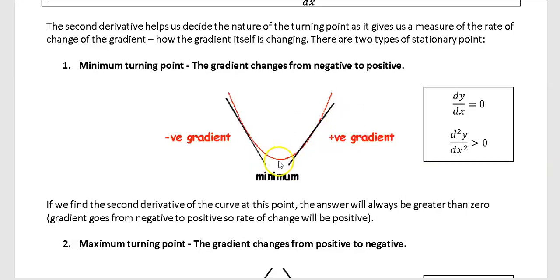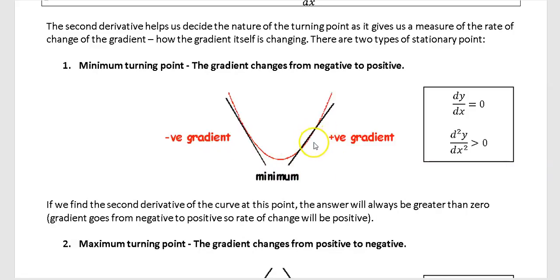At the minimum point the gradient is zero — if you drew a line just touching the bottom, it would be horizontal, so dy/dx equals zero. There's an important thing that happens when you differentiate again. We talked about second derivatives earlier, and now we're going to see their actual purpose.